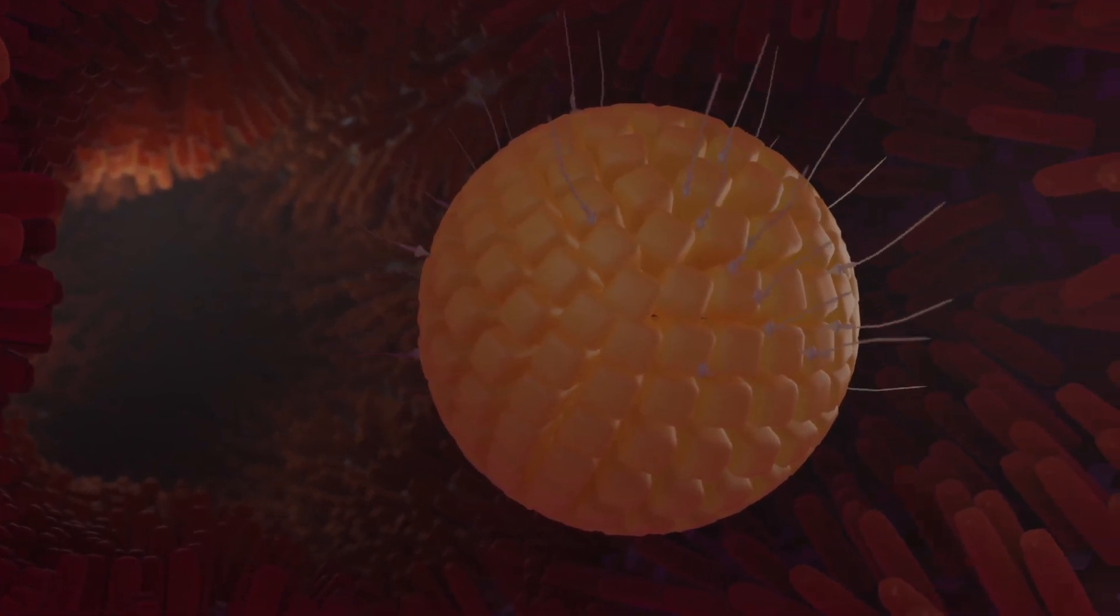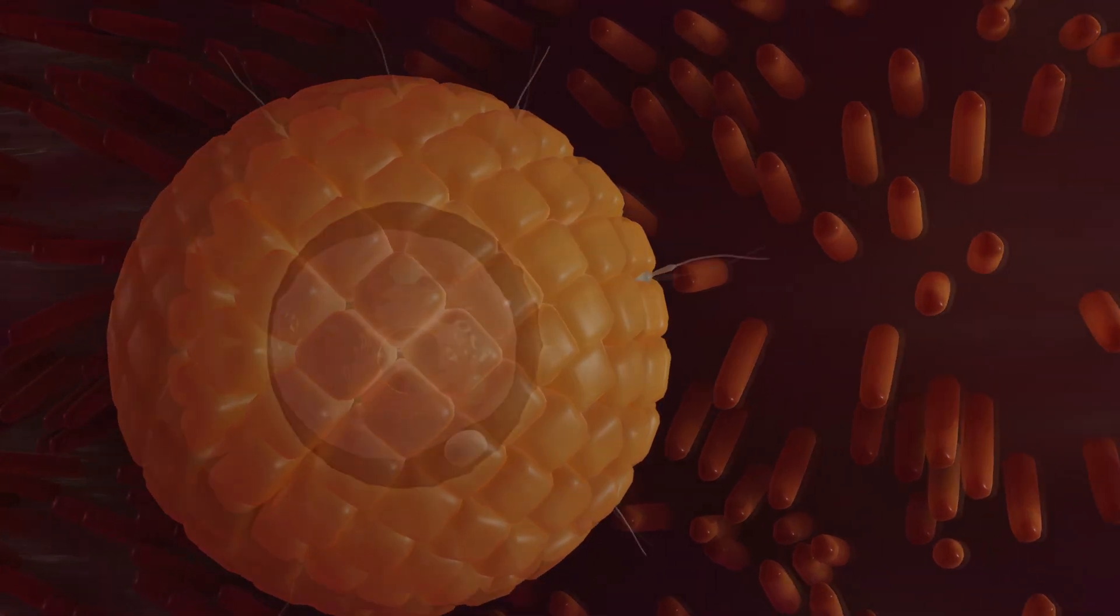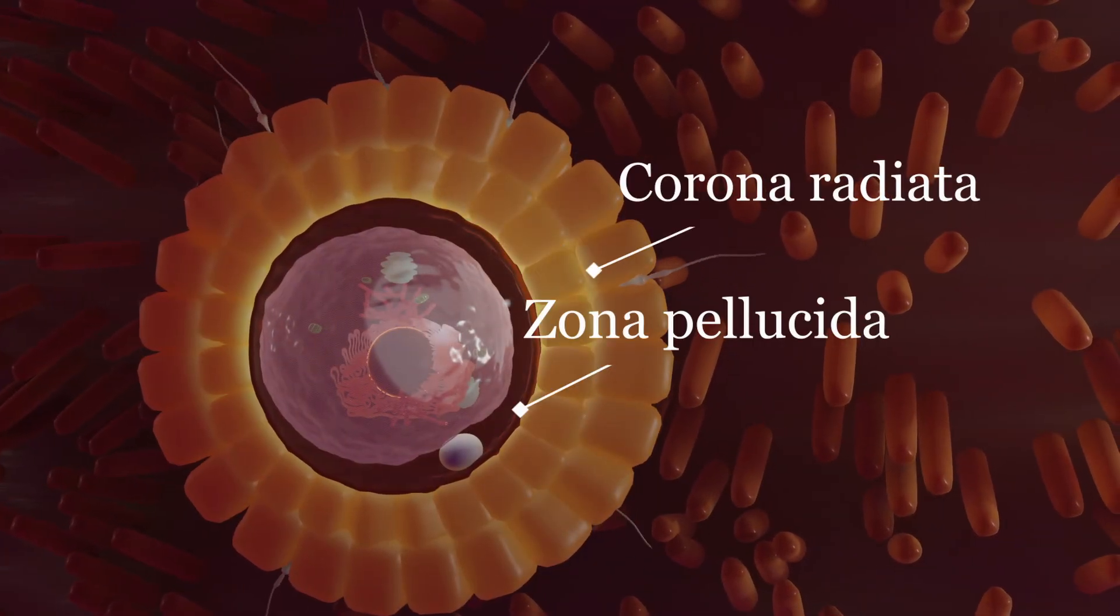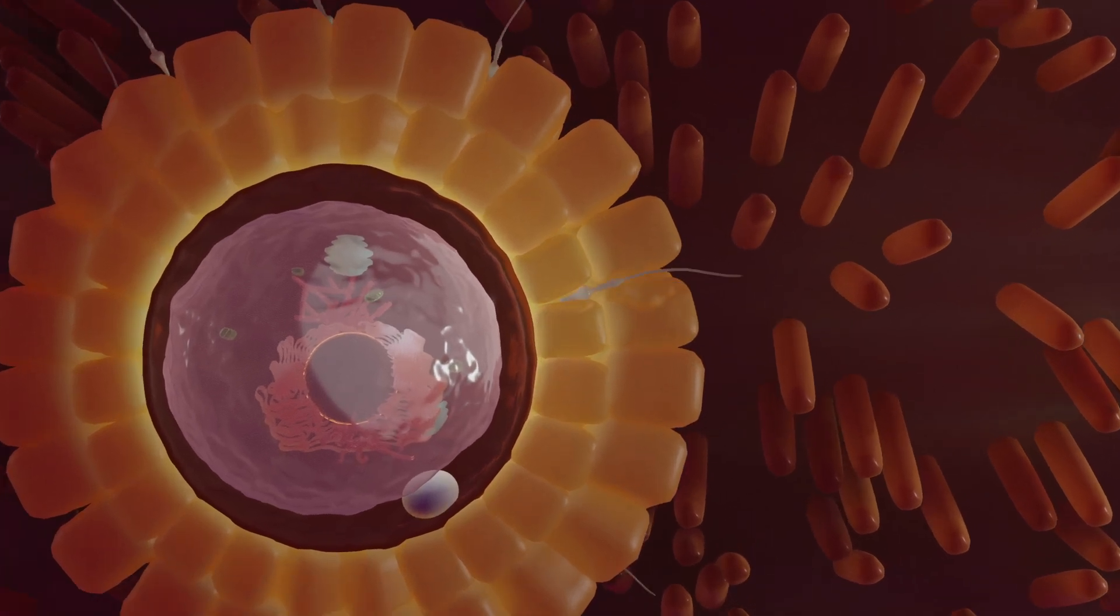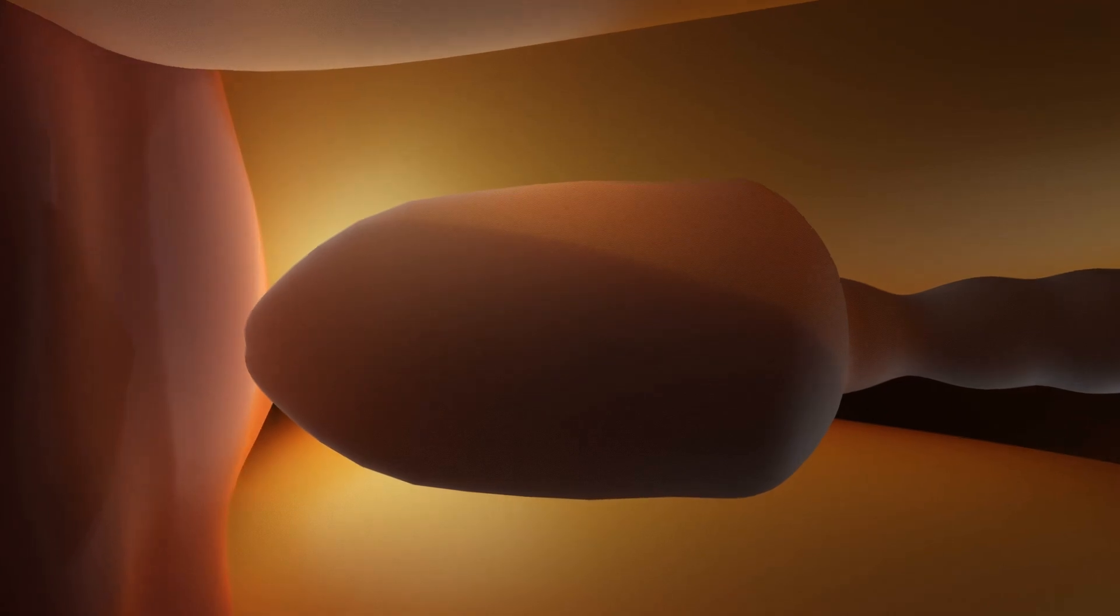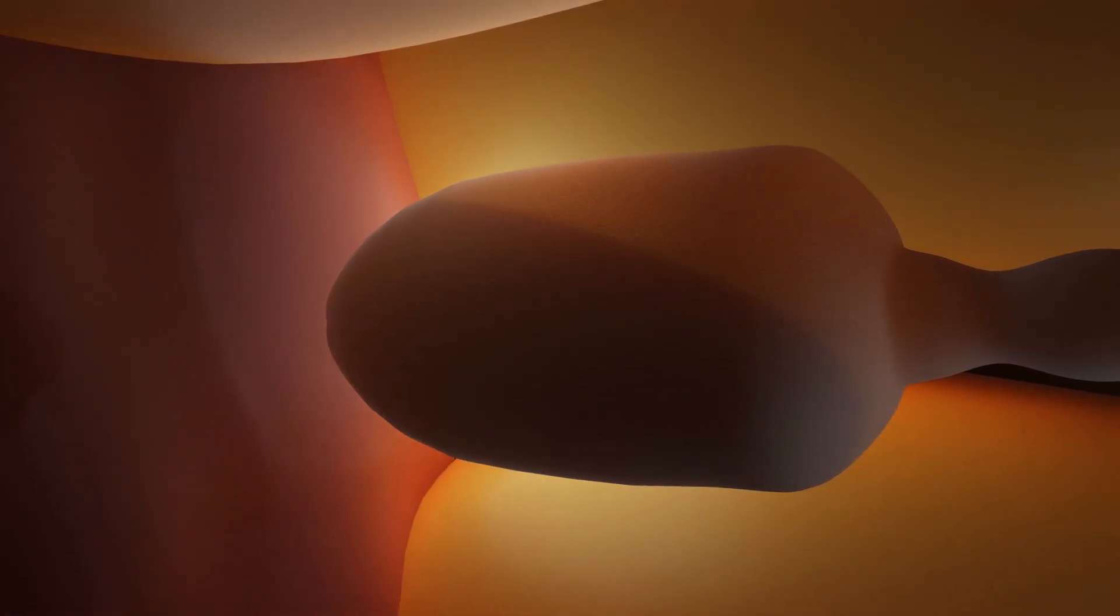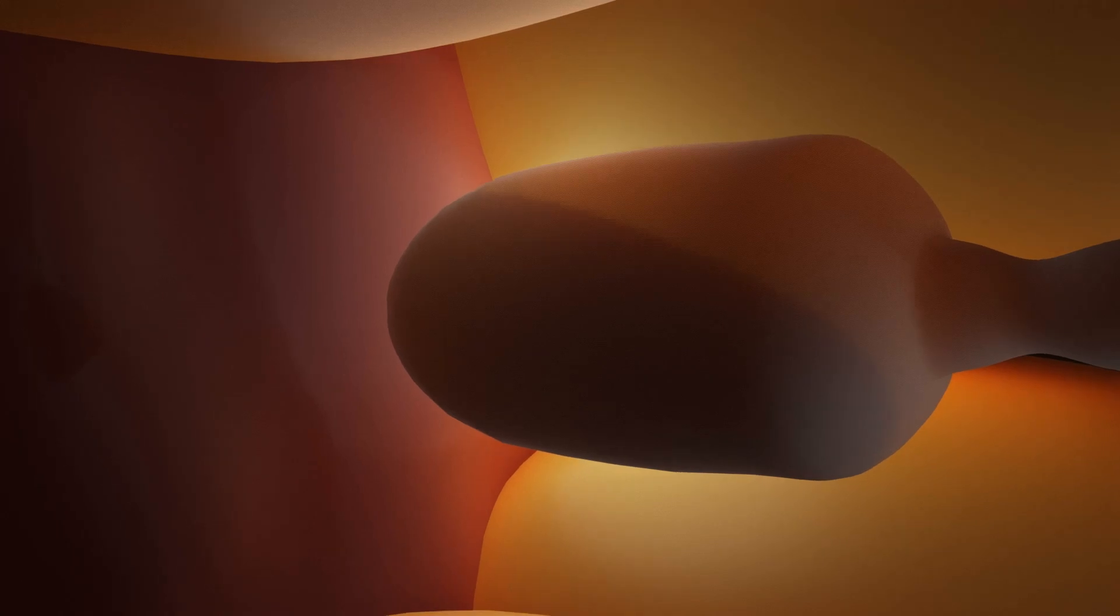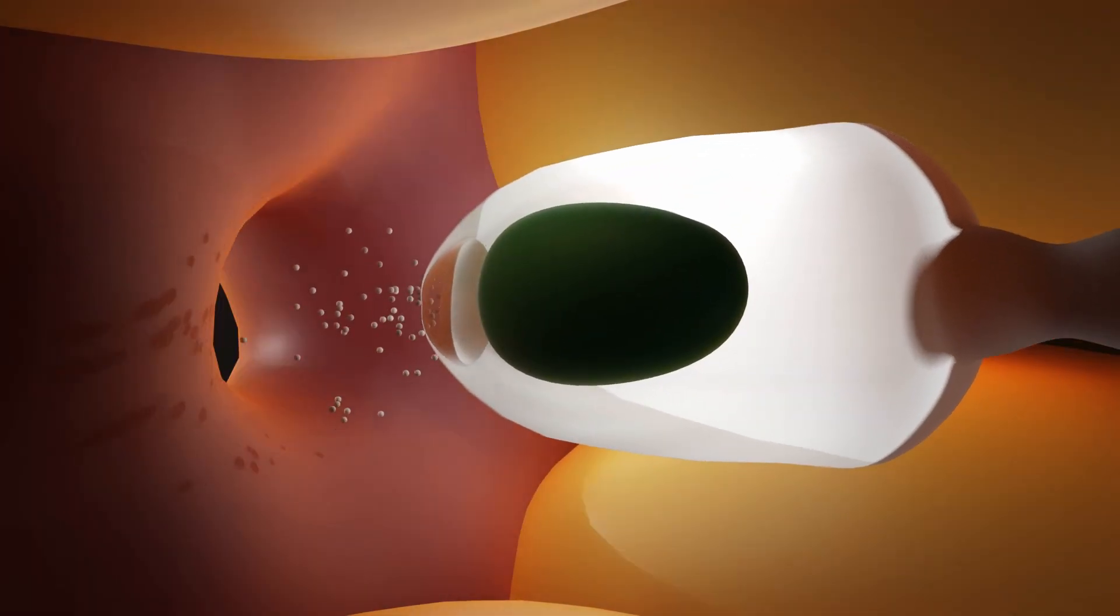Some sperm have spontaneously released certain enzymes which dissolve the bonds between the cells of the corona radiata and make penetration easier. When a sperm cell binds to the zona pellucida, this triggers the acrosome reaction. A small vesicle containing enzymes is located in the head of the male germ cells. The membrane of the acrosome fuses with that of the sperm, releasing the enzymes.